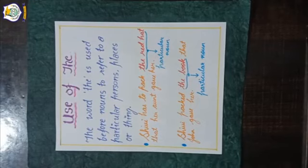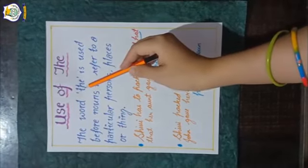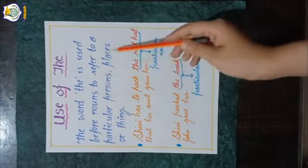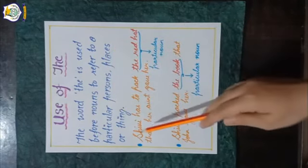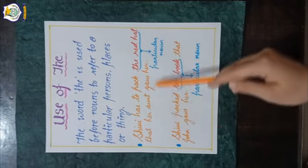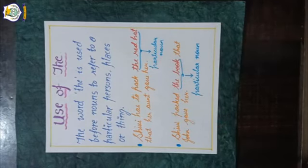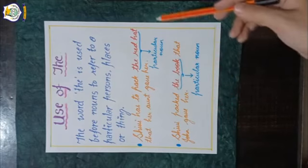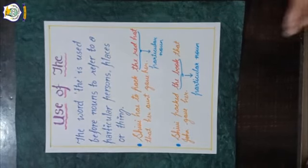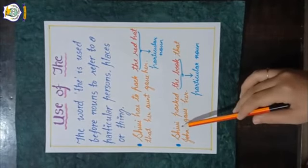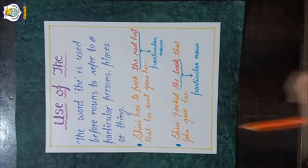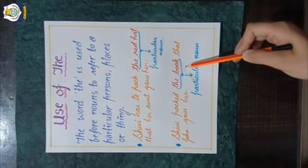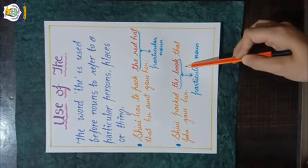We use the word 'the' before nouns to show that we are referring to a particular person, place, or thing. For example, Shivvy has to pack 'the red hat' that her aunt gave her — 'the red hat' refers to the particular hat that Shivvy's aunt gave her. In another sentence: Shivvy will pack 'the book' that John gave her — 'the book' refers to the specific book that John handed to Shivvy.